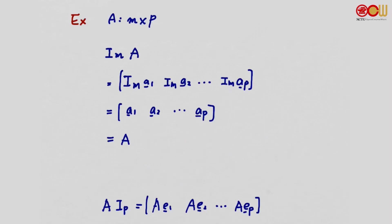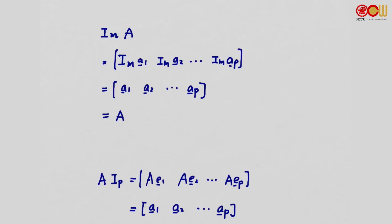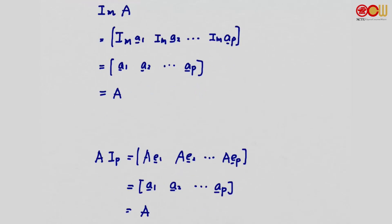Another example: consider the matrix product A · I_P, where the identity matrix is at the back. By definition, the first column is A·E1, the second column A·E2, all the way to A·EP. The matrix-vector product A·E1 extracts the first column of A, A·E2 extracts the second column, and so on. So again we get A1 as the first column, A2 as the second, and AP as the last column — we get A back.